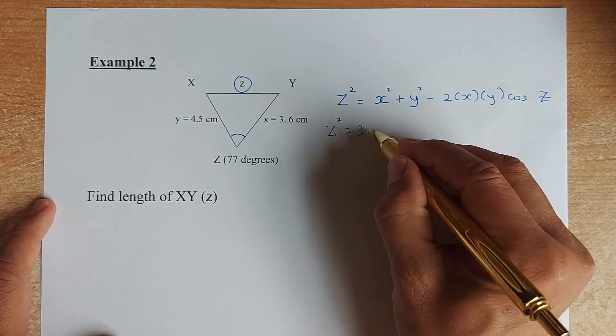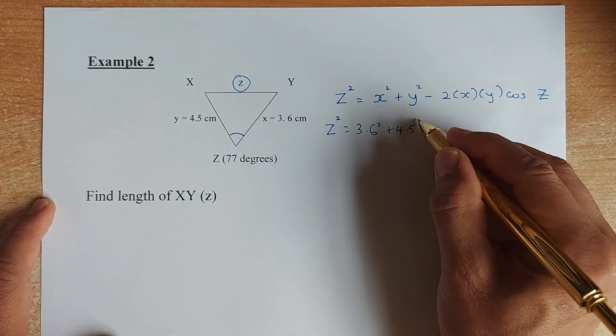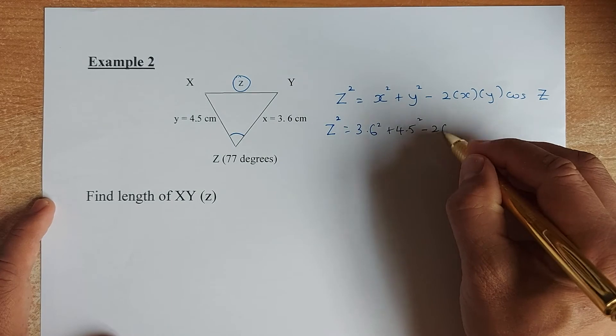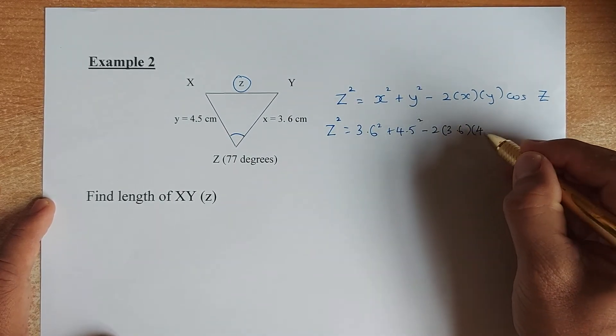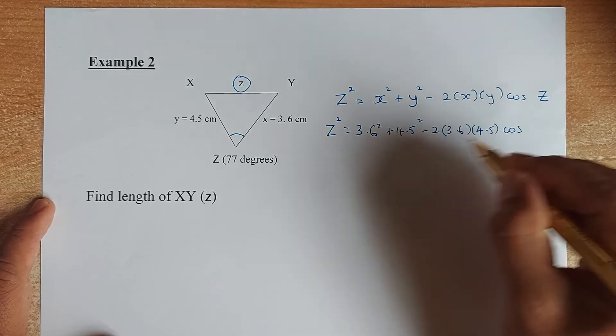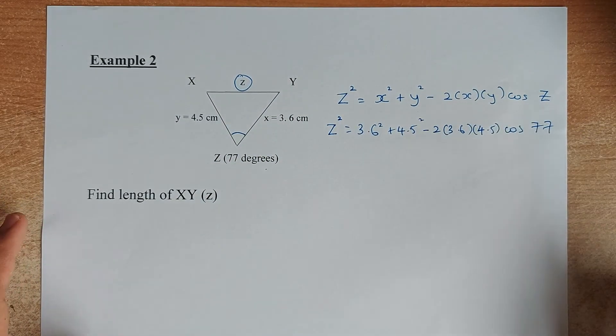Instead of x squared, we're going to put 3.6 squared. Instead of y squared, it's 4.5 squared. And then you're going to minus 2 multiplied by 3.6 multiplied by 4.5. And then we're going to put cosine of the angle, which is 77.